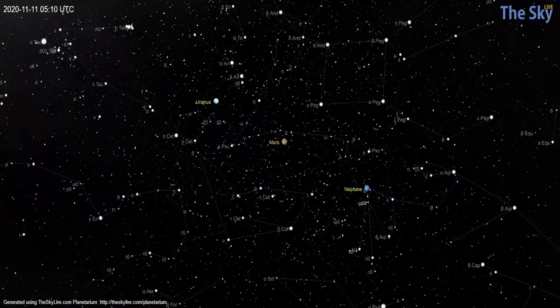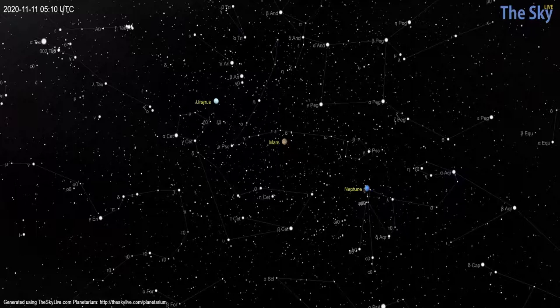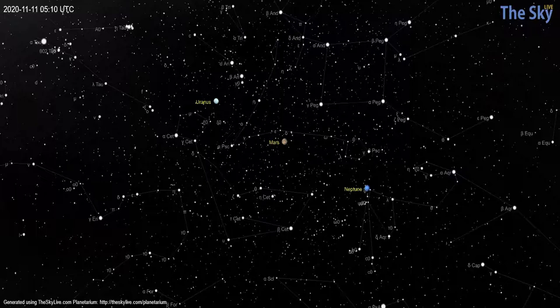Neptune, dimmer, darker, harder to find than Uranus, can be seen 11 degrees below and 31 degrees south or right of Mars. Finding this planet can present a real challenge for amateur astronomers.